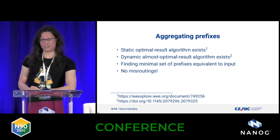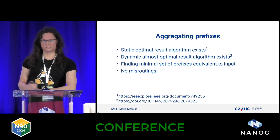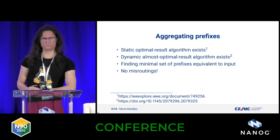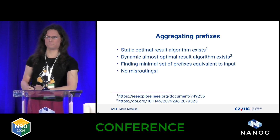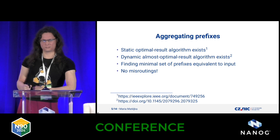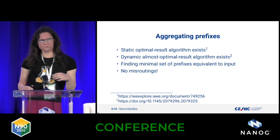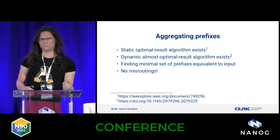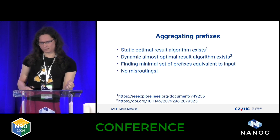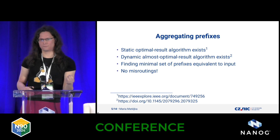For this there is a static algorithm: you take the whole routing table, pass it through the algorithm, and it spits out another routing table which is completely equivalent — it doesn't lose anything, it doesn't misroute anything. It's just a smaller number of routes, and it's proven to be optimal. There is also a dynamic algorithm which is almost optimal — almost optimal means you could reduce the number of prefixes even more, but it's just not worth it. It still does not misroute anything; everything is routed correctly. It just reduces the size by compressing prefixes which have the same next hop.